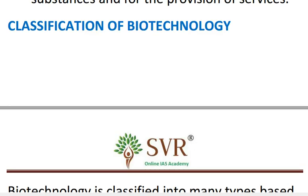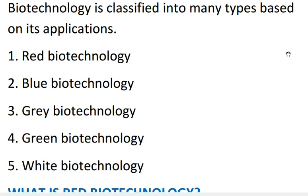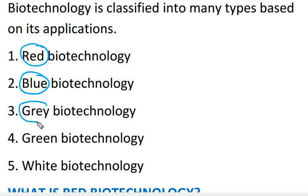Now we will discuss the various types of biotechnology. Biotechnology is broadly divided into five types: red biotechnology, blue biotechnology, grey biotechnology, green biotechnology, and white biotechnology.